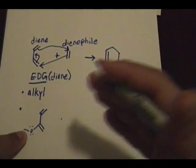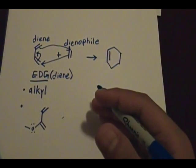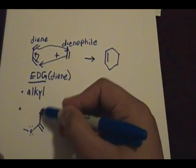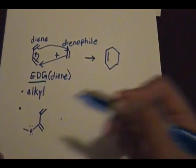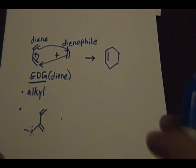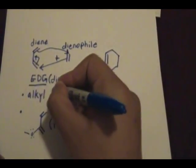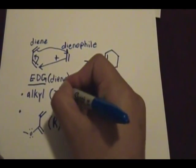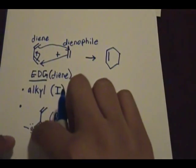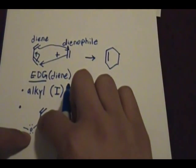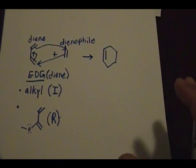Another form of electron donating group besides alkyl groups is when the atom directly connected to the conjugated system has lone pairs on it. That's a key signifier that it is an electron donating group by resonance — I'll put R for resonance. For alkyl groups it's I for inductive effect. If you have alkyl groups or a group where the atom directly connected to the conjugated system has lone pairs, it makes the diene more reactive and more stable.